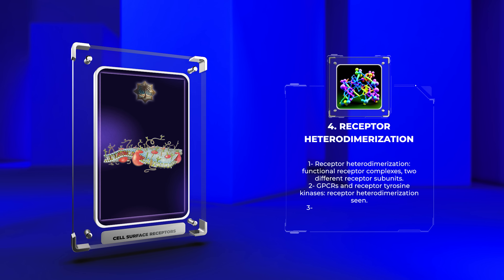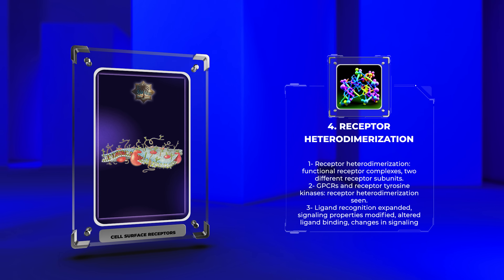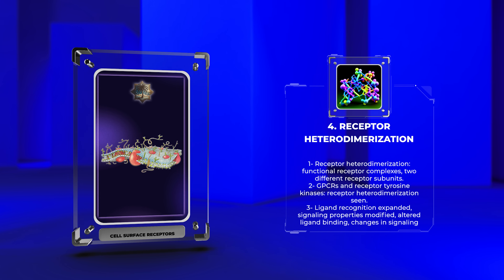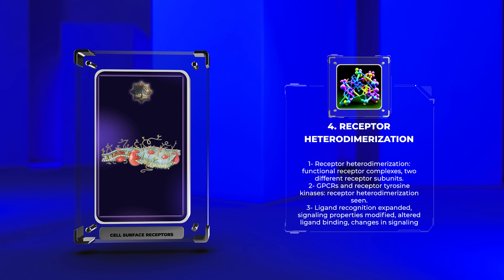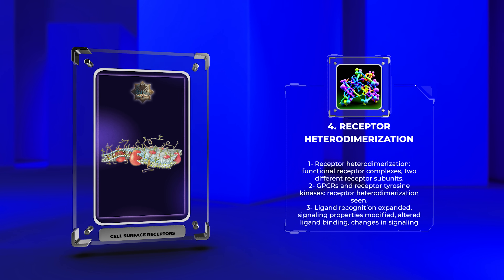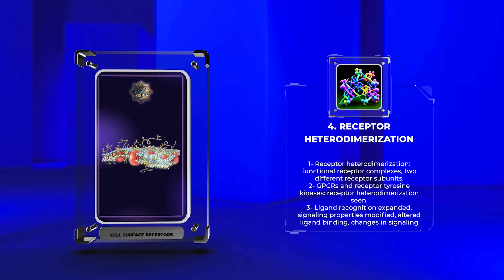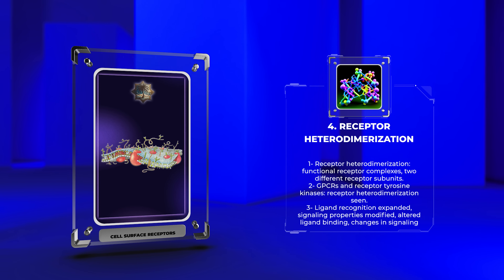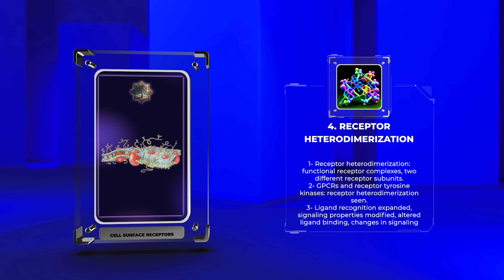Receptor heterodimerization involves the formation of functional receptor complexes with two different receptor subunits. This process is seen in various receptor families, such as GPCRs and receptor tyrosine kinases. It expands ligand recognition and modifies signaling properties, leading to altered ligand binding, changes in signaling pathways, and fine-tuning of cellular responses. For example, dopamine D1 and D2 receptors can form heterodimers with unique signaling properties, impacting motor control, reward systems, and cognition. Receptor heterodimerization is a fascinating area of research that unravels the intricate receptor signaling networks.